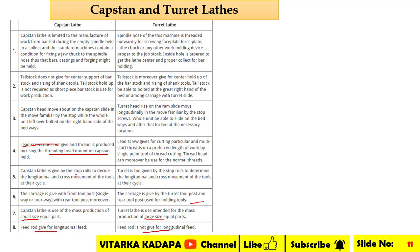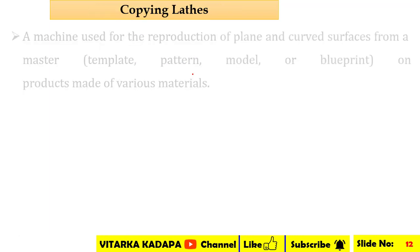Both lathes have stop rolls, which determine the longitudinal movement depending on their cycle. These are the various differences between the capstan lathe and the turret lathe.